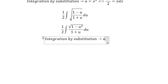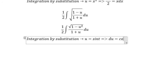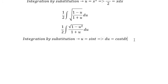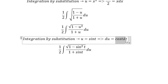u equal to sin t, du equal to cos t dt. So we put sin t in here and in here, du we change to cos t dt.